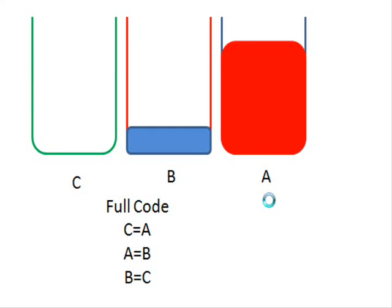So the full code for this is going to be like this: C equal A, A equal B, and B equal C. This is basically how you swap two variables.